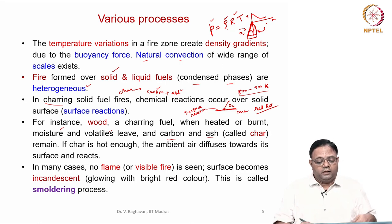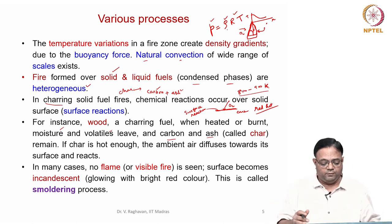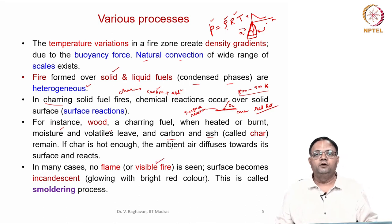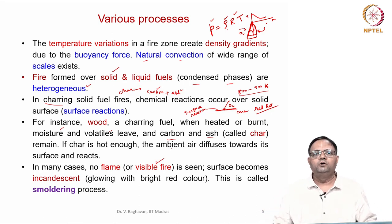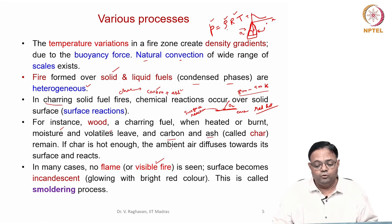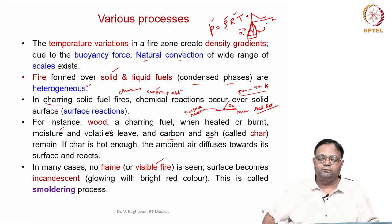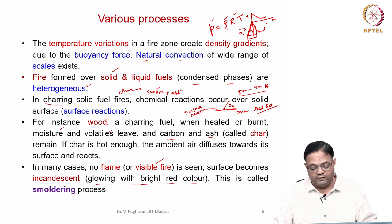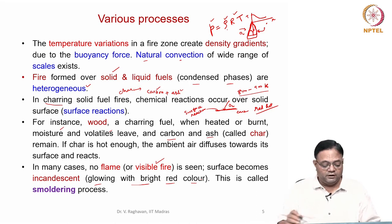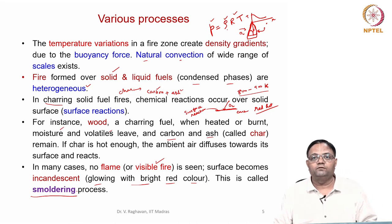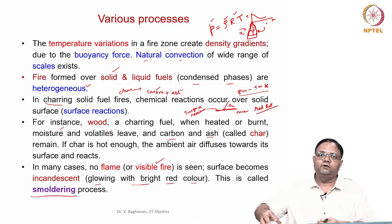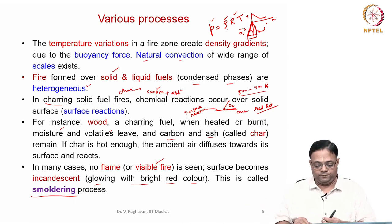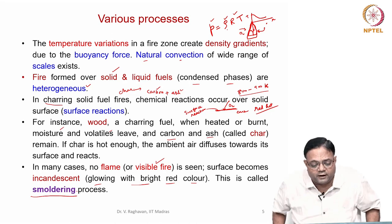A condition where you see a flame coming out is called a visible fire — smoke also comes out and flames in bright orange color can be seen. If you only have char and oxygen burns at the surface as a surface reaction, you will see a red-hot glowing surface. This process of surface reaction is called the smoldering process, where oxygen comes to a solid surface and reacts with the carbon.